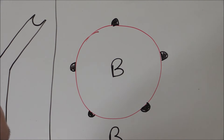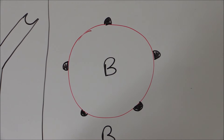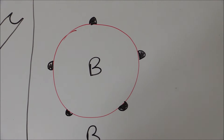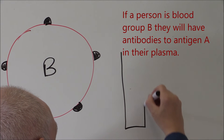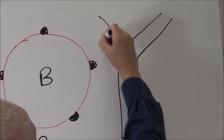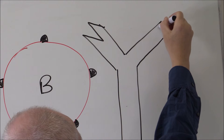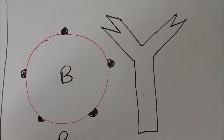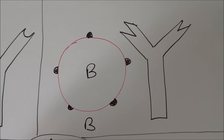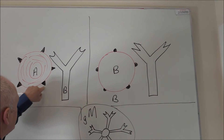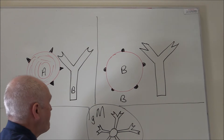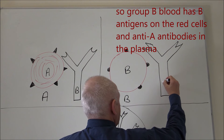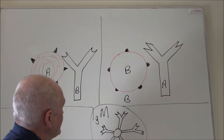Of course this person also has plasma, and in the plasma there are antibodies. The antibodies in group B blood are going to be anti-A antibodies. To simplify it, we can just draw one of the Y-shaped molecules — and these are anti-A antibodies, so their end is going to be that triangular shape, which is of course the reciprocal shape to the antigen drawn on the group A red cell. So: group A blood has A antigens and B antibodies; group B blood has B antigens on the red cells and anti-A antibodies in the plasma.